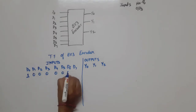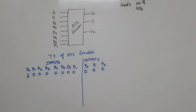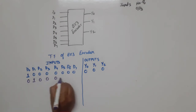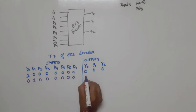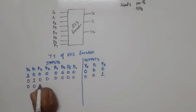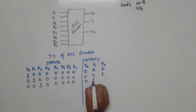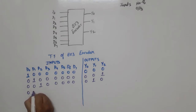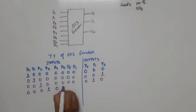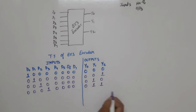Let's start making the truth table. When D0 is high, remaining all are 0. The binary output is 0 0 0. Next, D1 is high, remaining all are 0, binary is 0 0 1. Next, D3 is on, remaining all are 0, and we write in binary: 0 1 1.